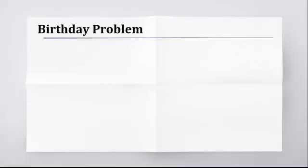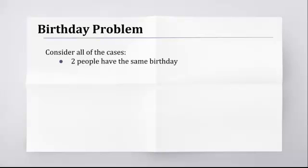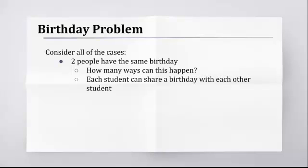The birthday problem. We're going to walk through actually how to calculate this probability. So we have to consider all of these cases. Two people have the same birthday, because remember it's just like you have a matching pair. Think about how many ways that could happen. Each student can share a birthday with each other student, so you don't just have somebody shares a birthday with me. It's also somebody shares a birthday with somebody else, or they share a birthday with another student. And so you have each combination of every student sharing a birthday.